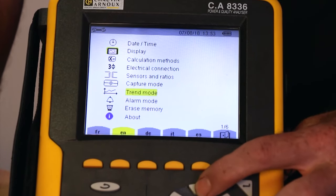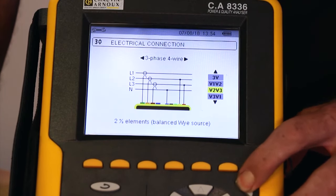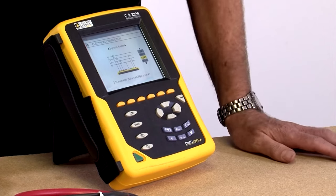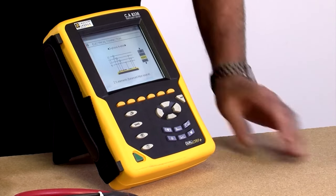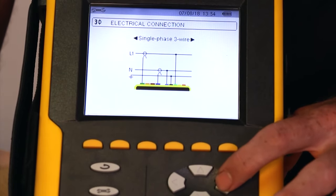So let's go straight into selecting the electrical connections. Highlight electrical connection, press enter, and by pressing the right cursor key, you'll be able to see the various electrical connections. Select the one that's appropriate to the installation you're connecting to and press enter.